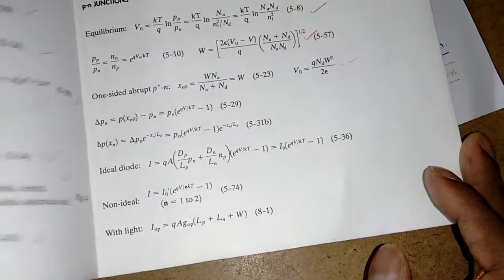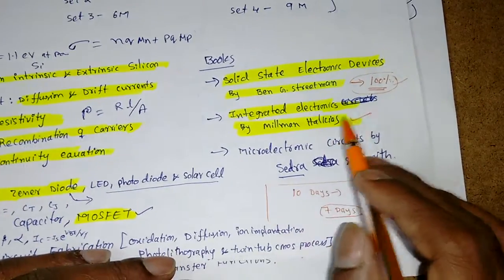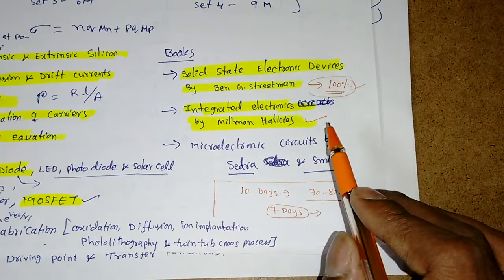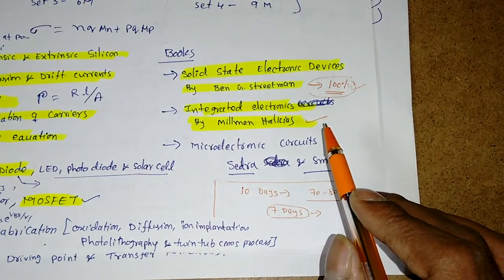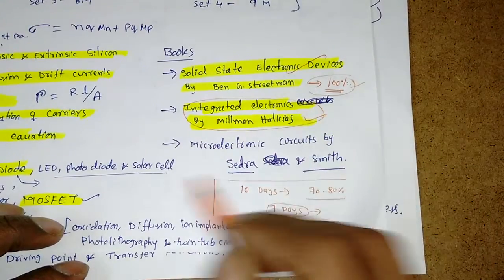If you follow these formulas, you will get at least two marks in the GATE exam. There is no doubt. That's why we have to prefer this textbook first, then we can follow this also. Then one more book is Microelectronics by Sedra and Smith.